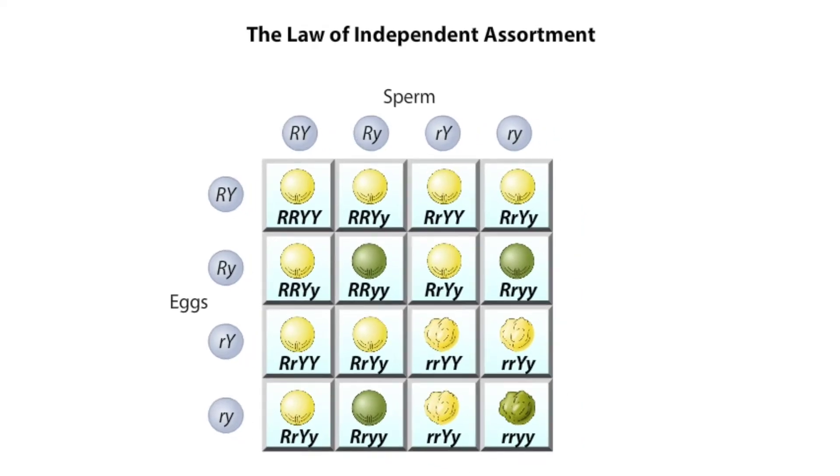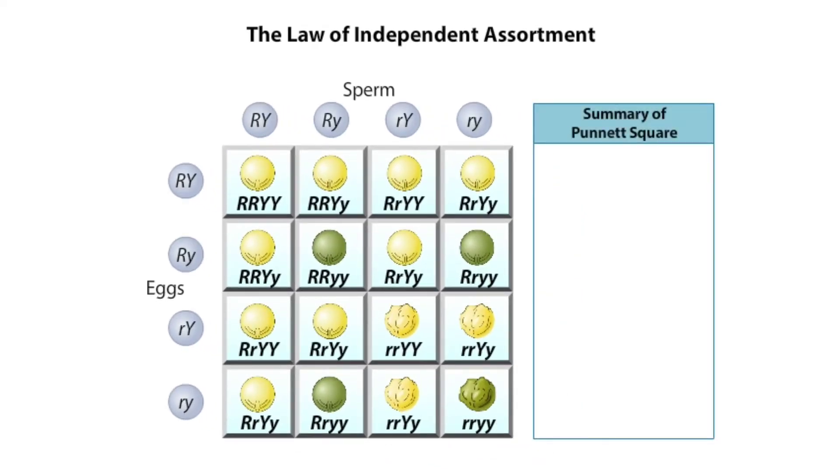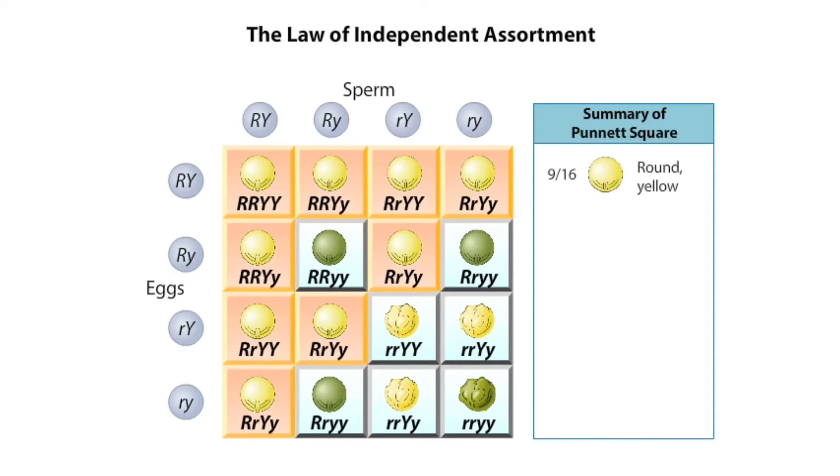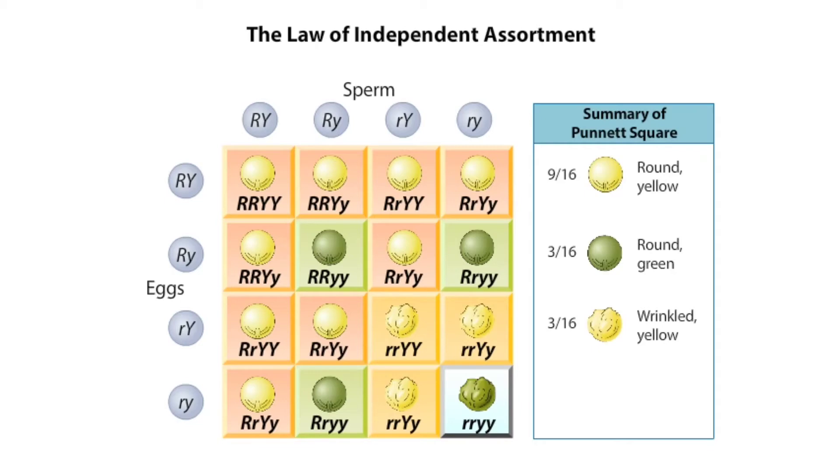The Punnett square depicts the phenotypic ratios of alleles that are assorting independently. That is, 9 out of 16 F2 individuals would have round and yellow seeds, 3 out of 16 would have round and green seeds, 3 out of 16 would have wrinkled and yellow seeds, and 1 out of 16 would have wrinkled and green seeds, an overall ratio of 9 to 3 to 3 to 1.